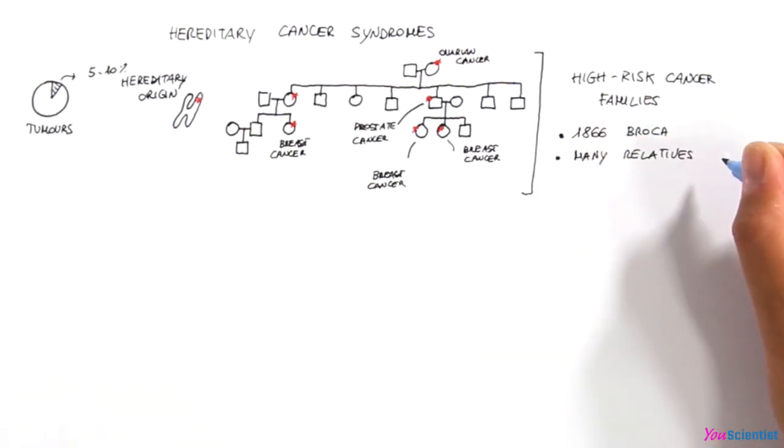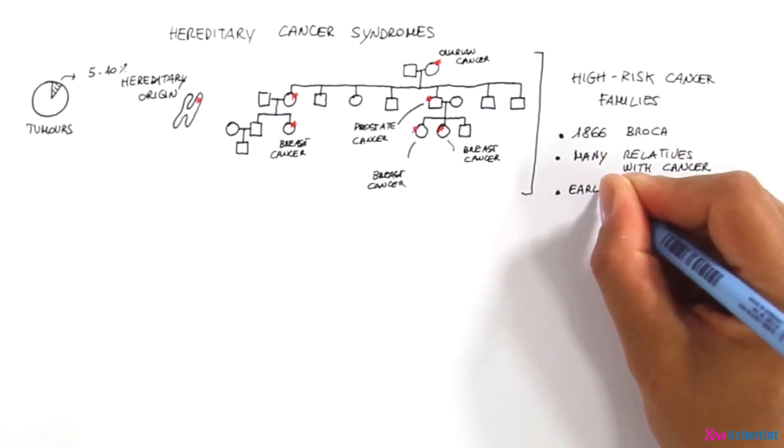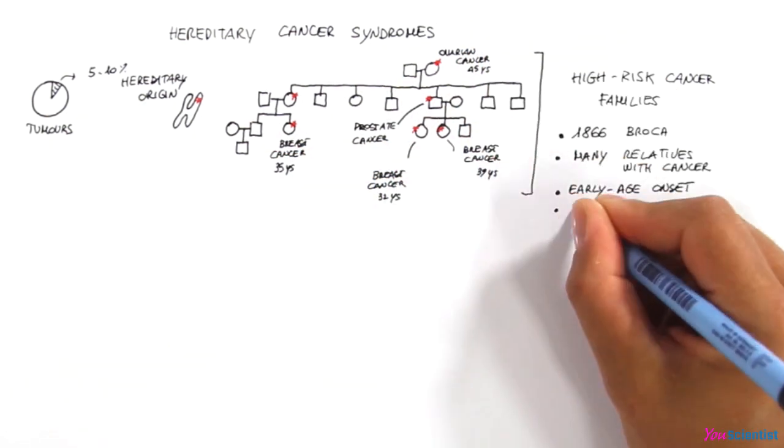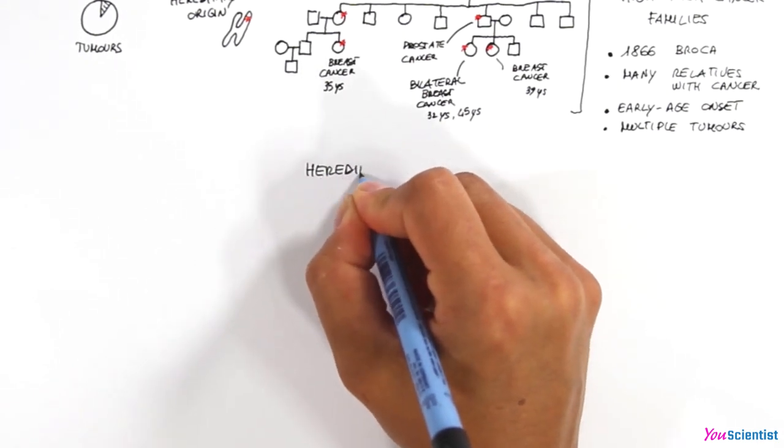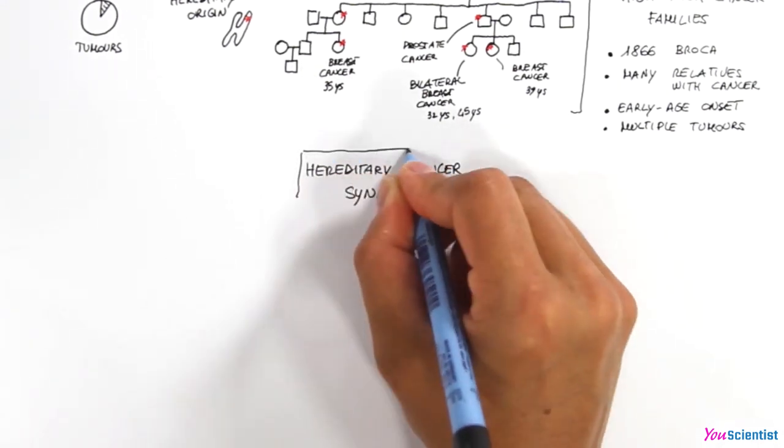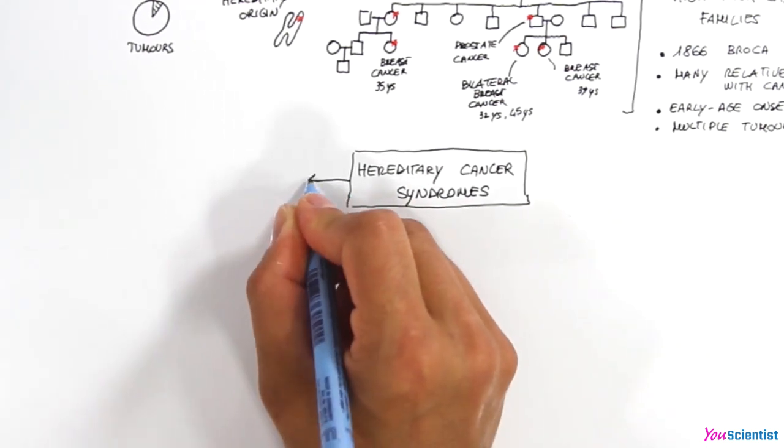High-risk cancer families are characterized by the presence of many relatives with cancer, by early age onset, and by multiple cancers in the same person. There are more than 100 hereditary cancer syndromes which are implicated in an increased cancer predisposition.